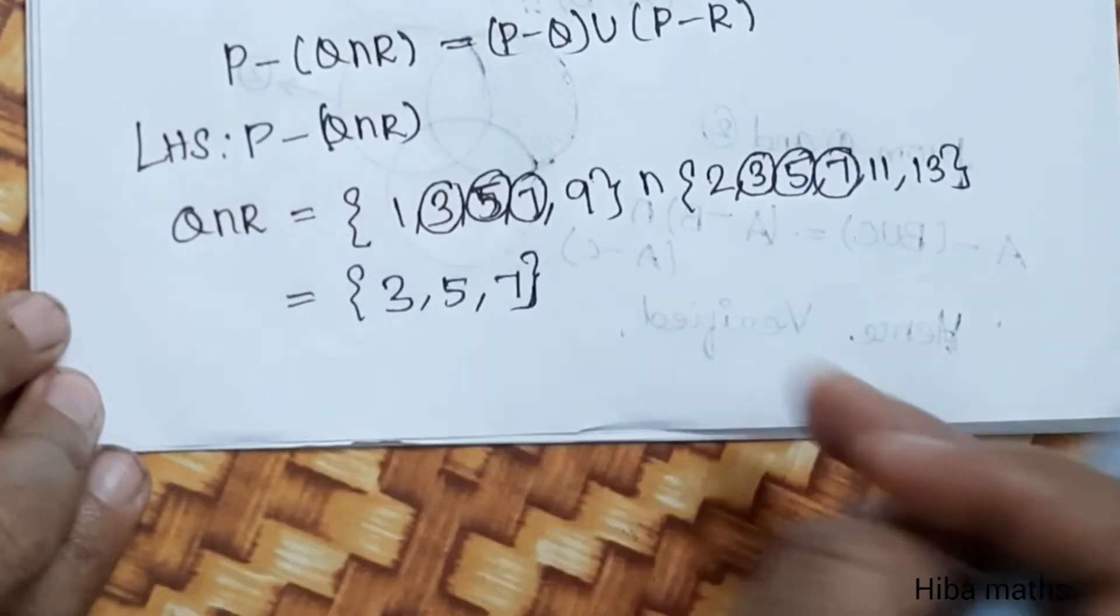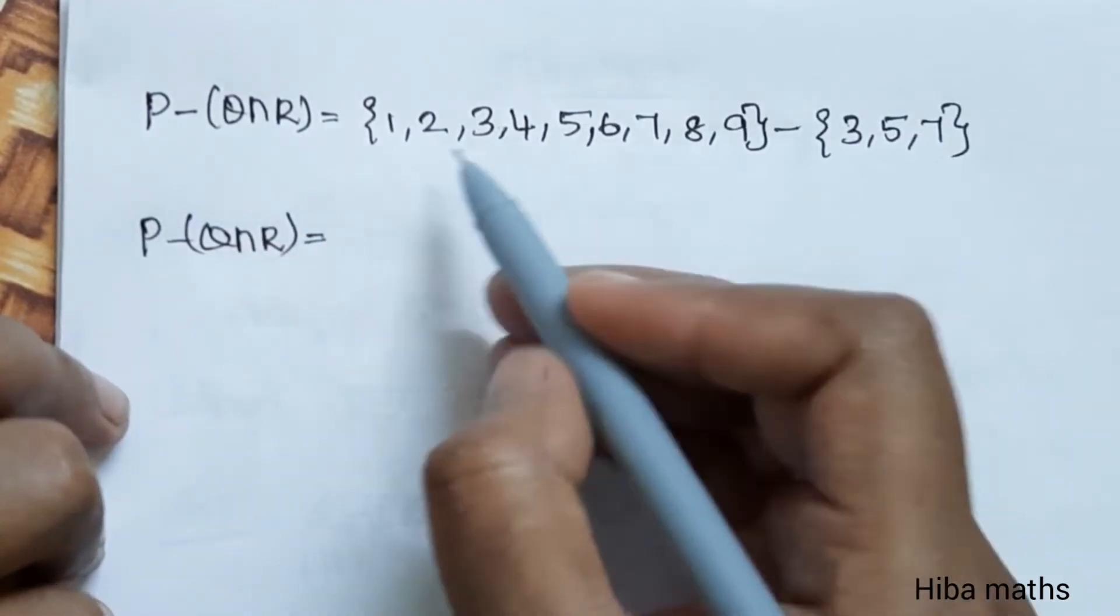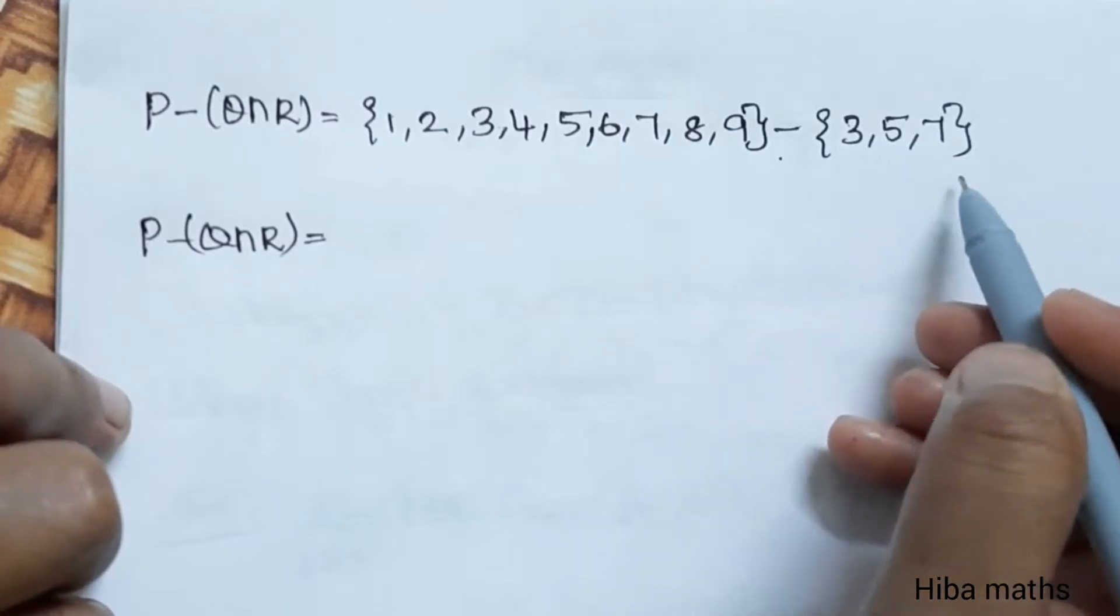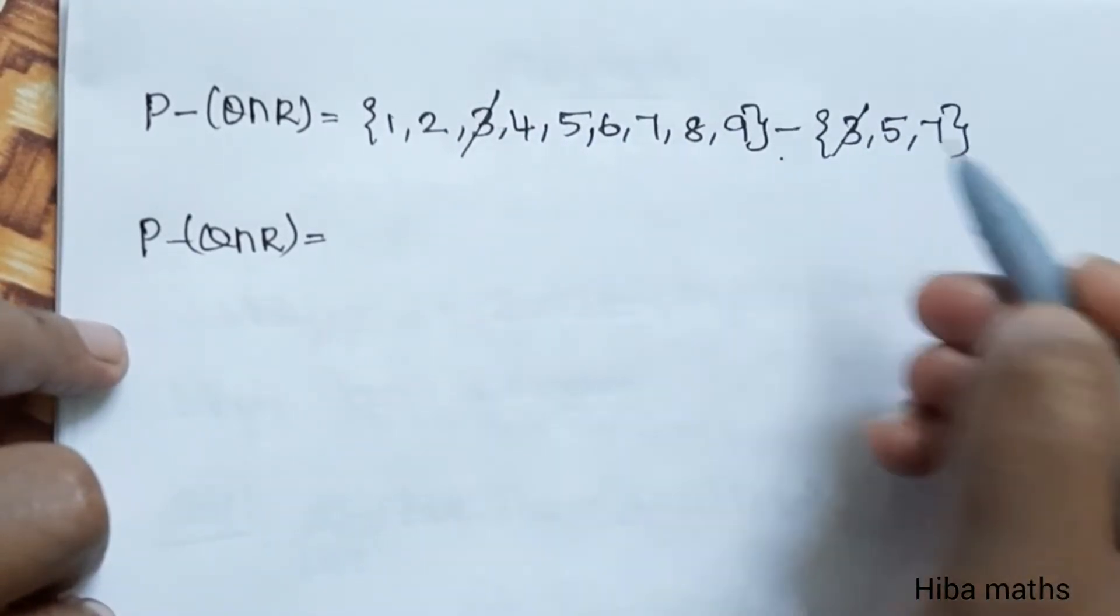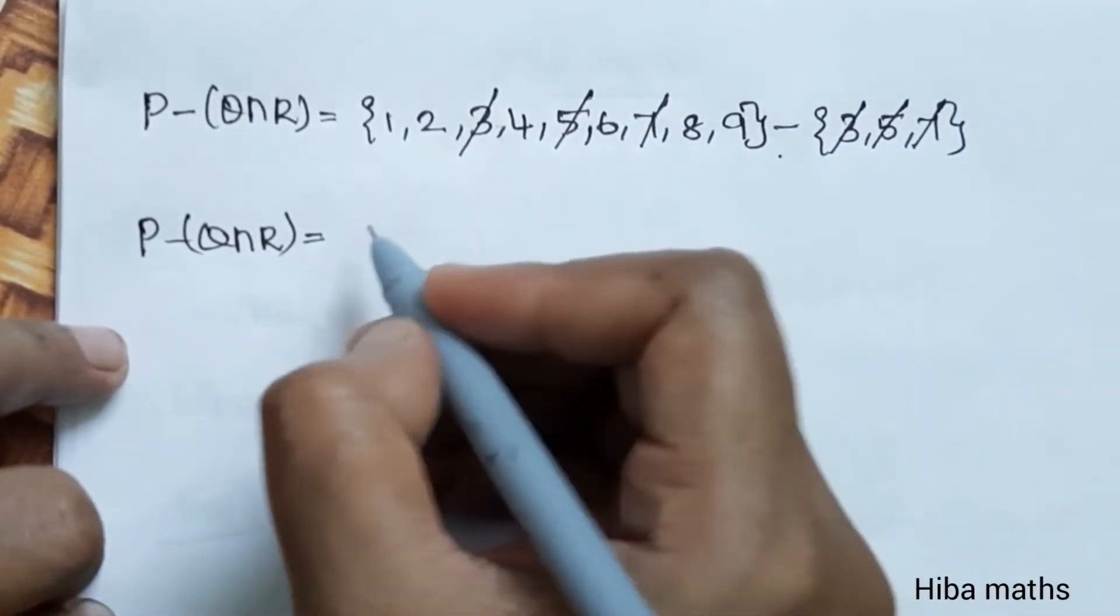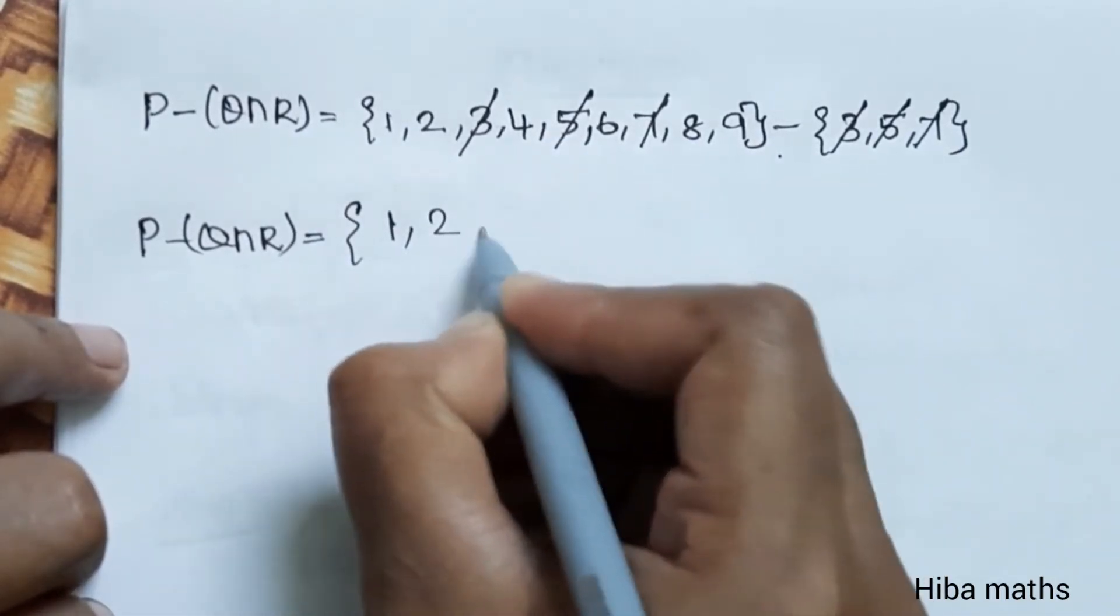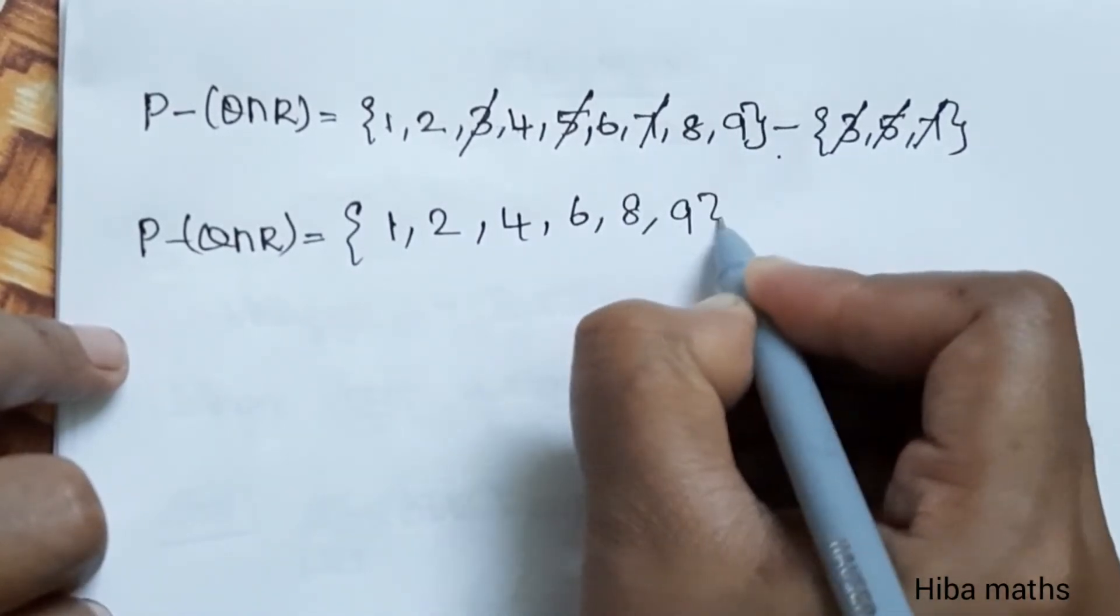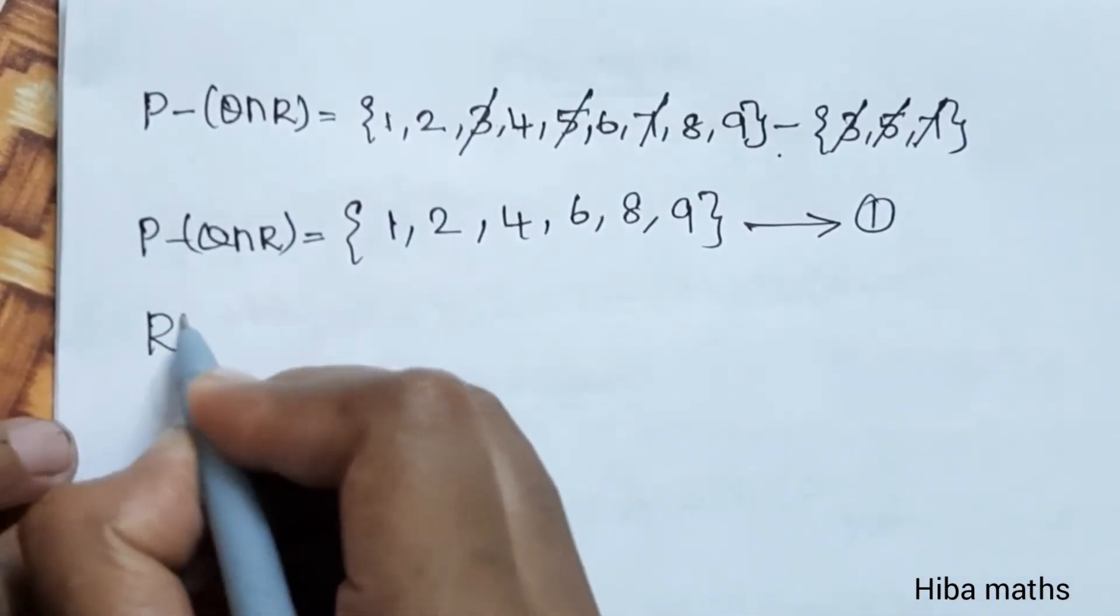P minus Q intersection R: P value is 1, 2, 3, 4, 5, 6, 7, 8, 9. Q intersection R is 3, 5, 7. Common elements we cancel: 3, 5, 7. Balance equals 1, 2, 4, 6, 8, 9. This is our first set, that is LHS.